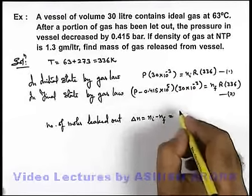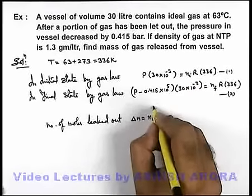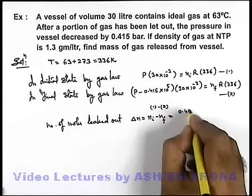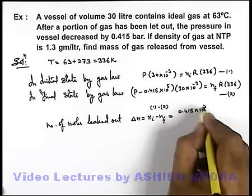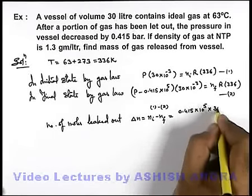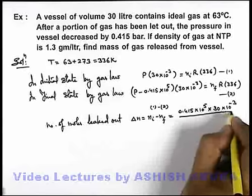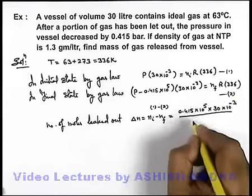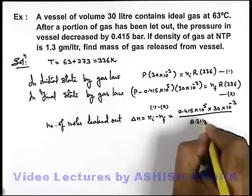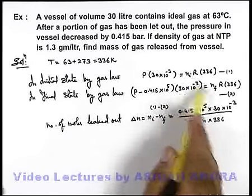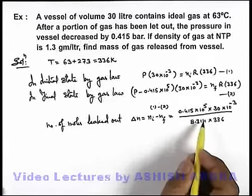If we subtract, 1 minus 2, this will give you 0.415 into 10 to power 5, multiplied by 30 into 10 to power minus 3, divided by RT, it is 8.314 multiplied by 336. You can easily subtract the two and get the value of n_i minus n_f.